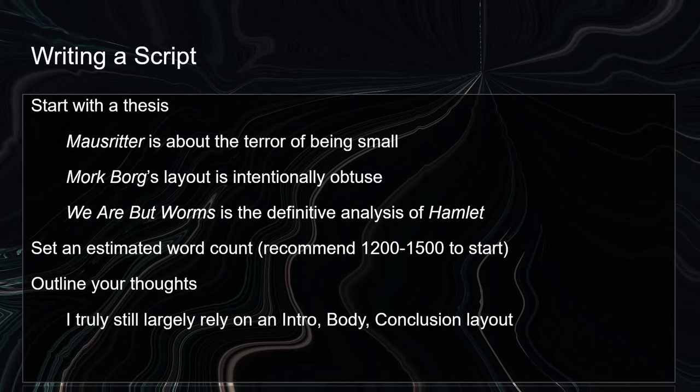Okay, so you've got a game. You've got kind of an idea brewing in your head, and you want to talk about this game. Where do you start with the script? Like I said before, you start with a thesis. Mouse Ritter is about the terror of being small. I did another one about Mörk Borg and how that layout is intentionally obtuse — it fits into the theme of the game, a game that hates you, and so its layout also hates you. And then my best RPG video essay ever — probably the greatest video essay ever — which is the 'We Are But Worms' essay. Trying to say, hey, this is how you should read Shakespeare's Hamlet — through the text of 'We Are But Worms.' If you can narrow it down to a short, concise statement about what you're trying to accomplish with that video, it's going to be a lot easier to achieve a narrow and focused script.